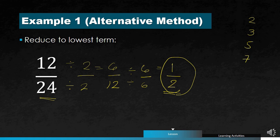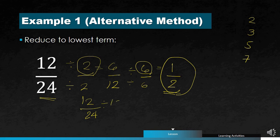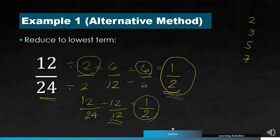If you notice, 2 times 6 is 12, so the GCF of 12 and 24 is actually 12. If you had thought of this immediately, you could divide directly: 12 over 12 is 1, and 24 over 12 is 2 — giving 1 half. You get the same answer whether you find the exact GCF right away or use continuous division, though continuous division is a bit slower.